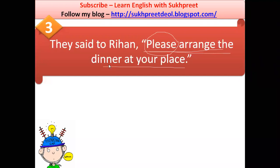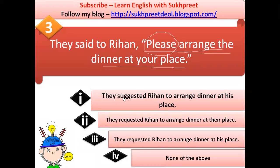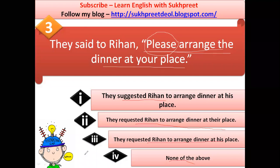Many of you were able to tick the right option. The options are: first, 'they suggested Rehan to arrange dinner at his place'; second, 'they requested Rehan to arrange dinner at their place'; third, 'they requested Rehan to arrange dinner at his place'; or none of the above. The second and third options seem correct, but only one is right.